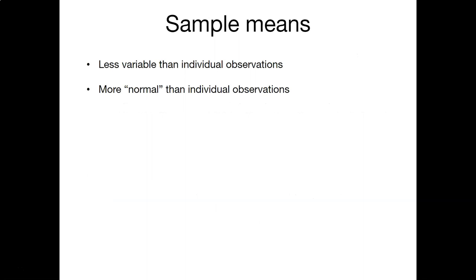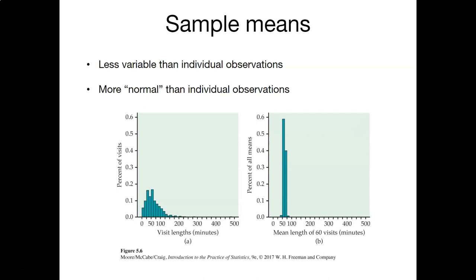Sample means are less variable than individual observations, and we might consider them more normal than individual observations. The graph here shows an example of the average visit lengths for trips to hospitals. The visit length observations on the left are really spread out, while the sample means of the visit lengths on the right are much less spread out. We can say that the visit length observations are a skewed distribution, while the distribution of sample means is more normally distributed.